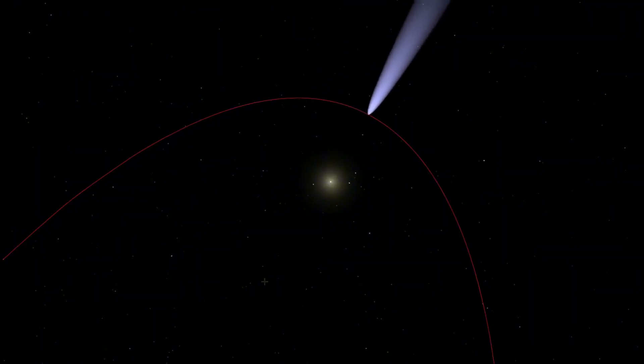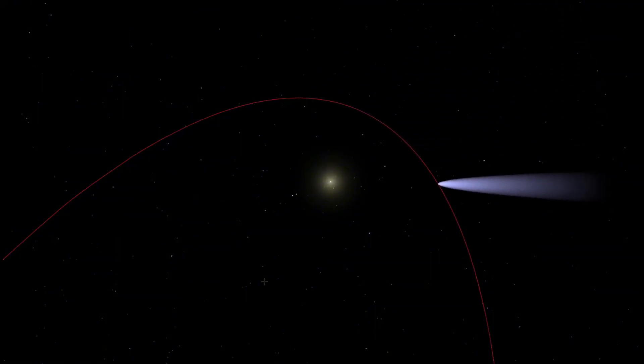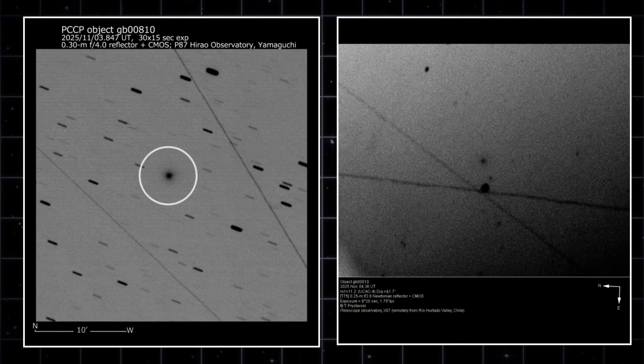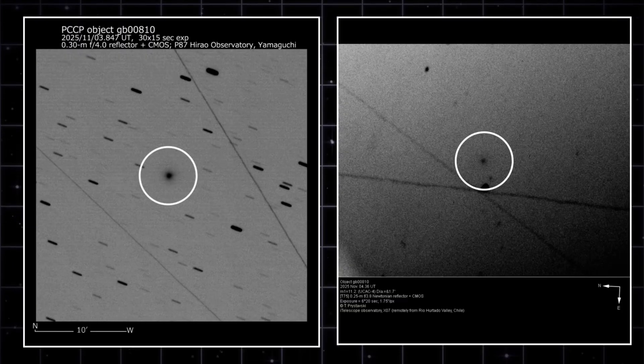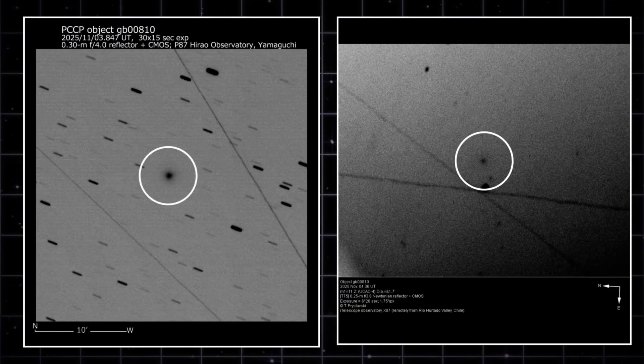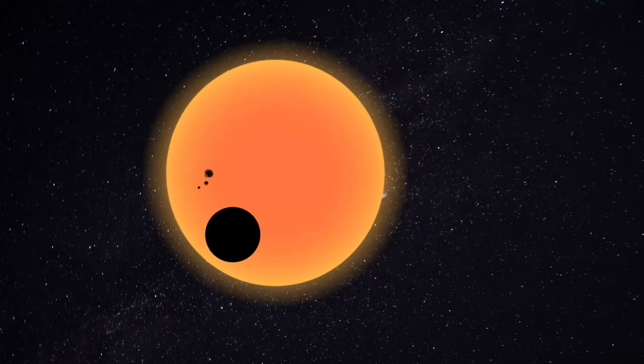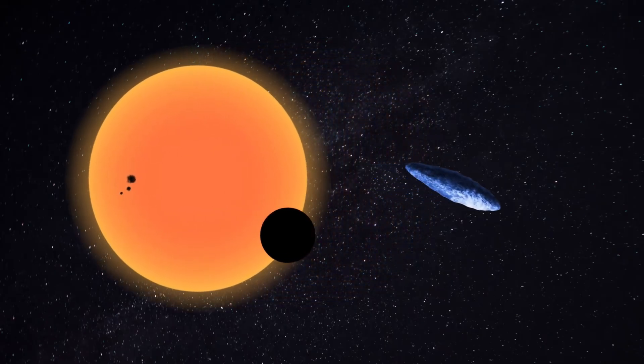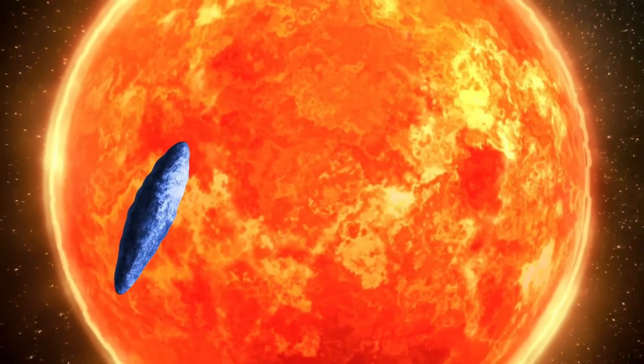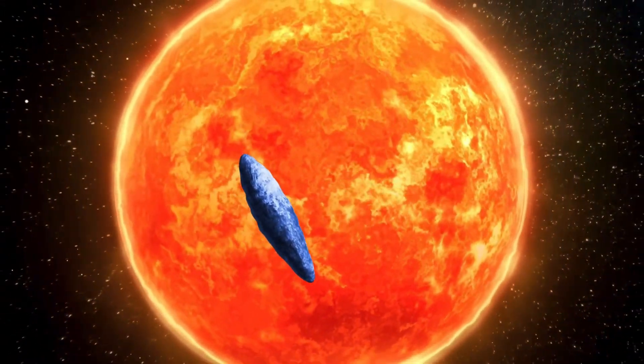There's even something else, an anti-tail extending in the opposite direction. That's dust trailing along the comet's orbital path, visible because of our viewing angle. Three images over six days, and each one shows more activity than the last. The question is, why?